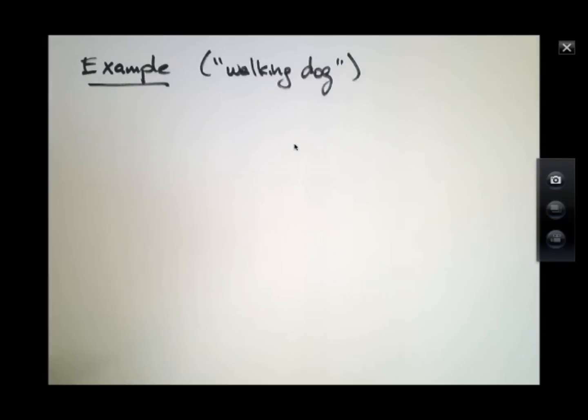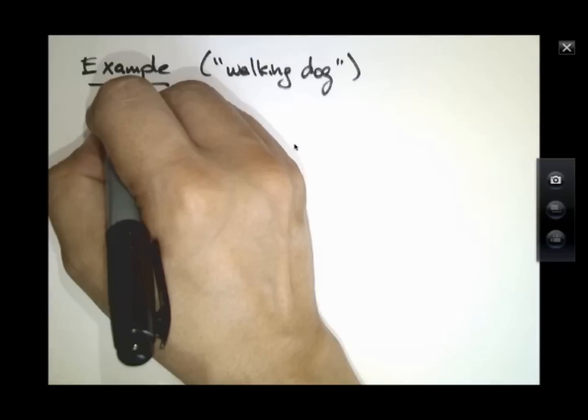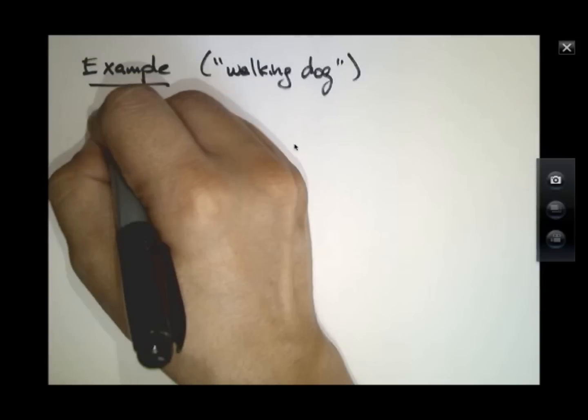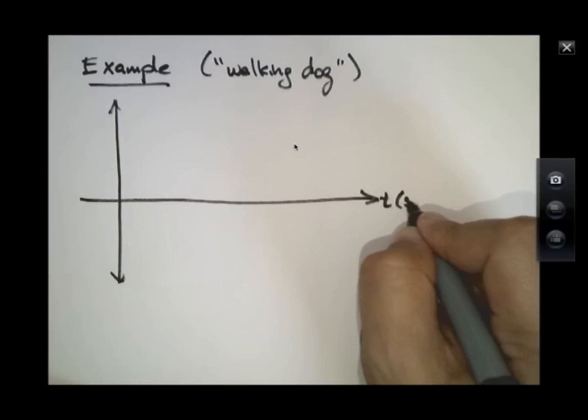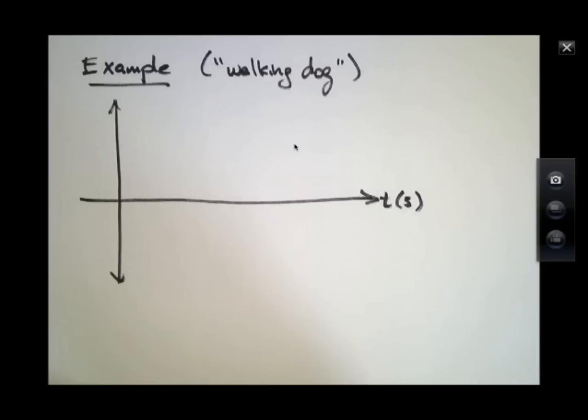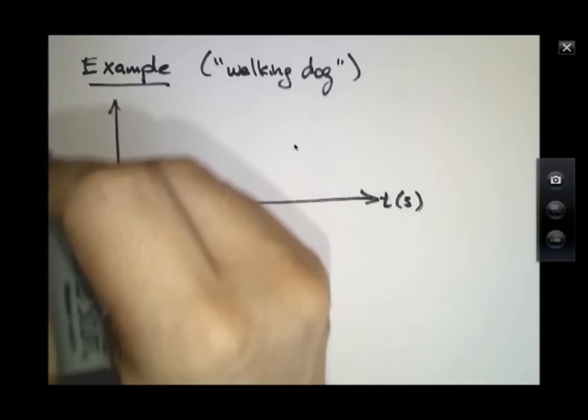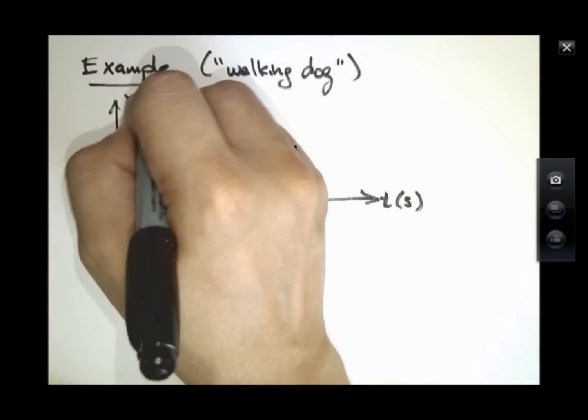Let's take another slightly more elaborate example. We'll call it the walking dog example. In this example we'll say that over a period of time, t in seconds, we have x applied up here in meters.